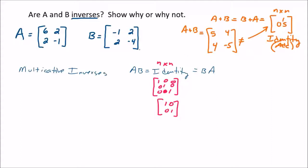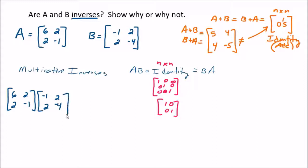Let's check if they are multiplicative inverses of each other. Multiplying matrices is a little more complicated than adding matrices, and we have to check both ways because matrix multiplication is not commutative. Adding matrices is commutative — B plus A gives the same result as A plus B. But the way you multiply matrices does not preserve the commutative property. So we're going to compute A times B and see what we get, looking for the identity matrix.